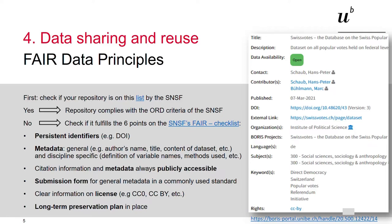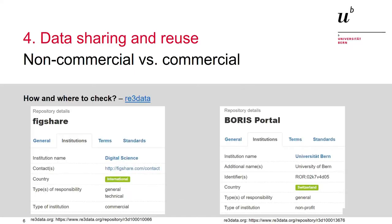You can check these six points by looking at the policies of the repositories, by checking already published datasets, or by asking the operators of the repositories directly. If you are unsure, you can also ask our team for support. For the question of whether your chosen repository is commercial or not, re3data can be used. If you want to check this, you can search for it on re3data and find the information under the tab Institution. For example, Figshare is a commercial repository, while Boris Portal is a non-commercial repository.